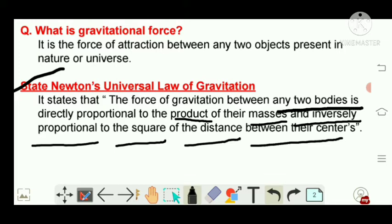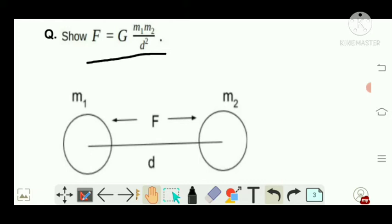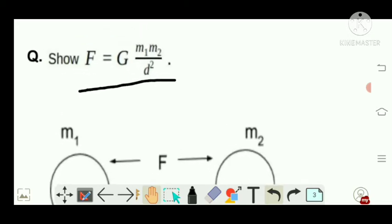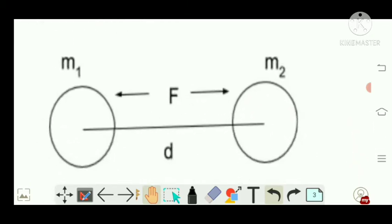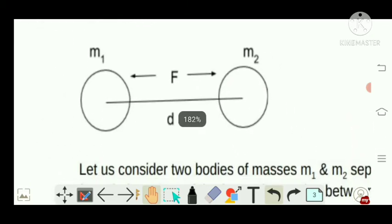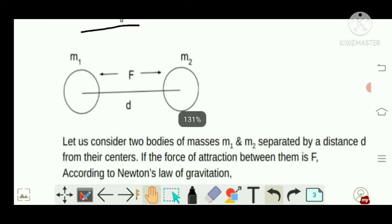Okay, now let's come to the topic. So F is equal to Gm₁m₂ by d squared. This is very important. Now let's go to the question, let's see the answer.